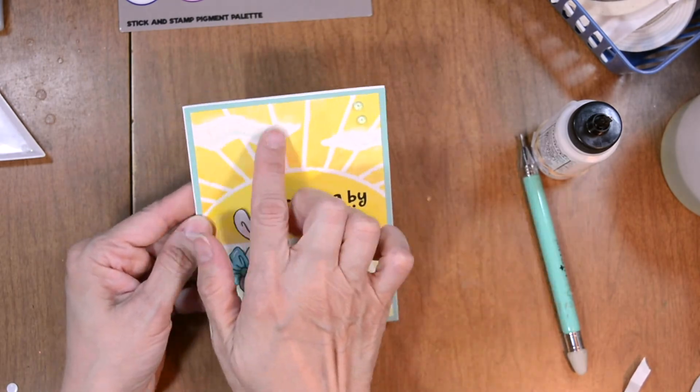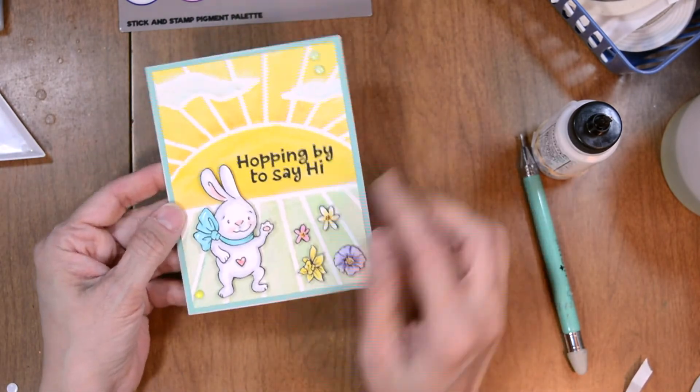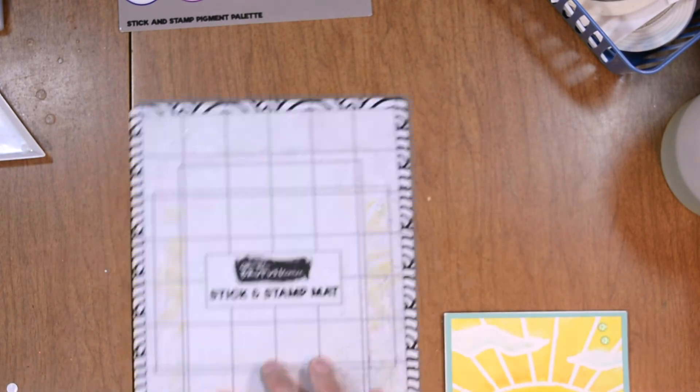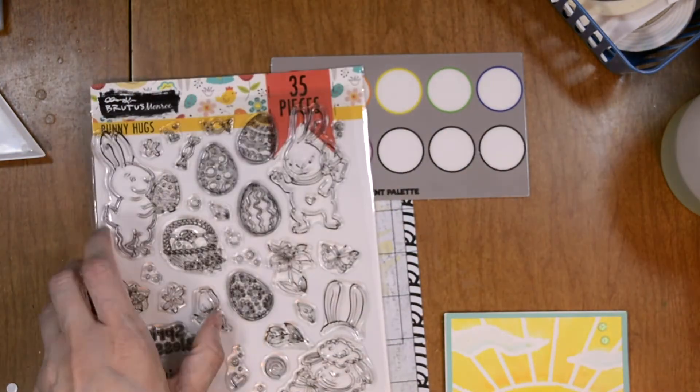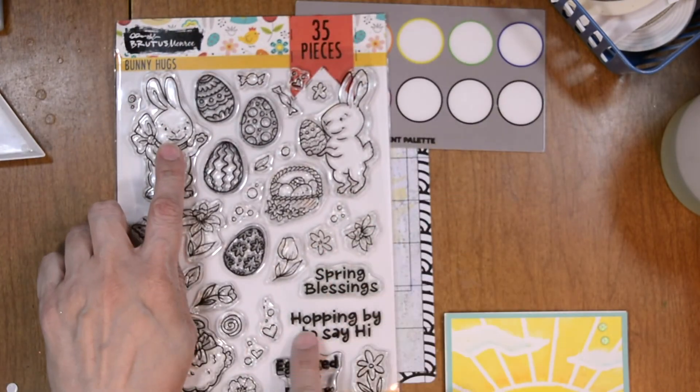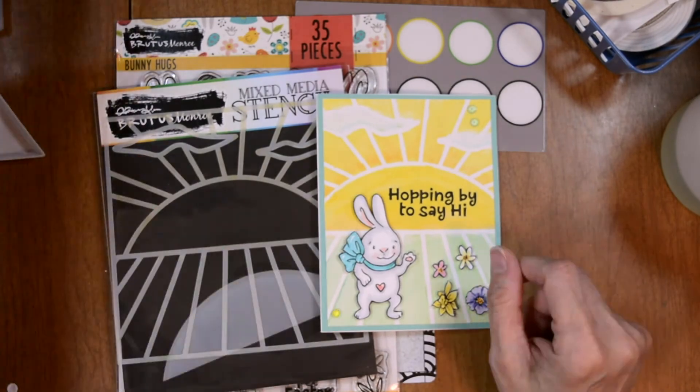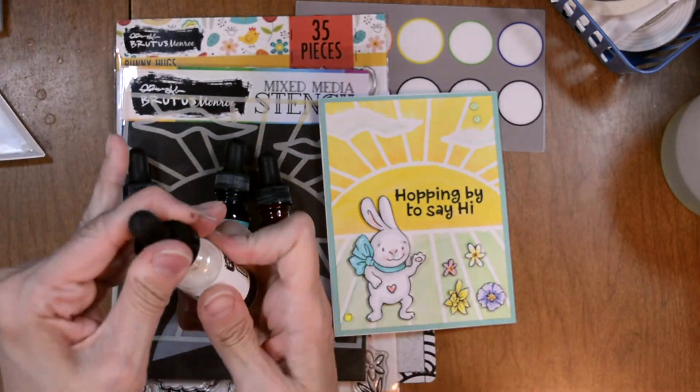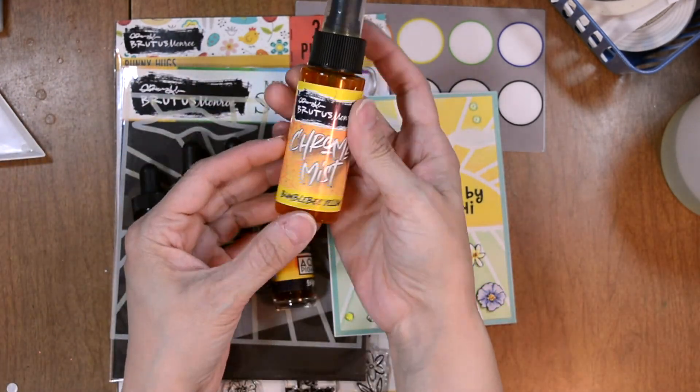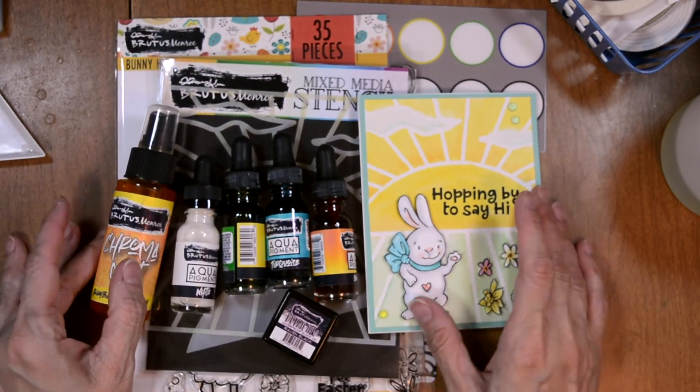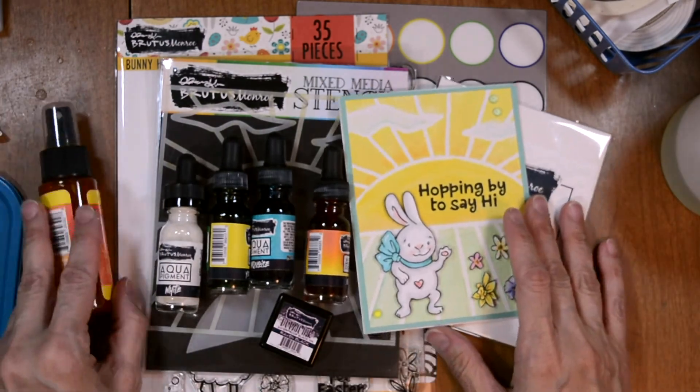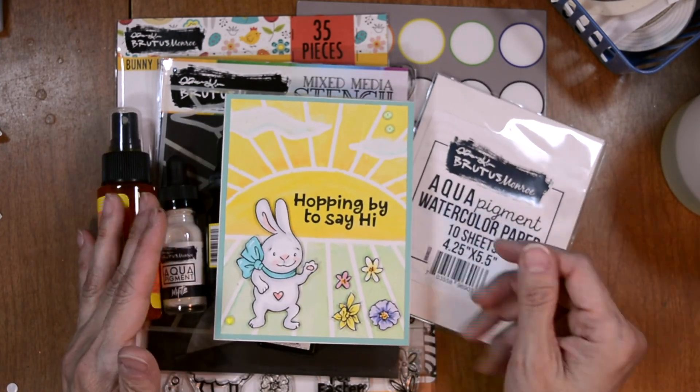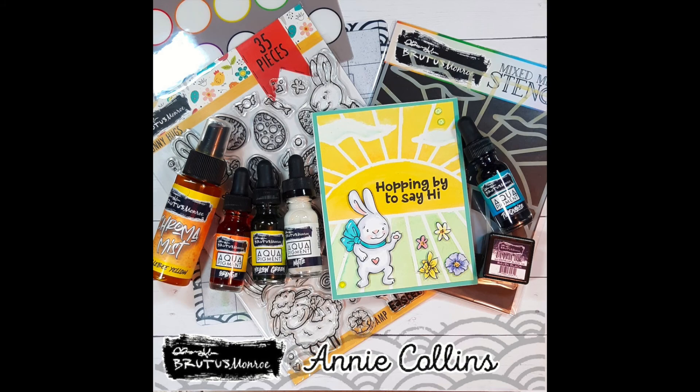There our project is complete. So we have our clouds, a fun field, a nice crisp sentiment, and our cute little bunny waving hi to you. I colored my images using Copic markers, and I'll have those listed as well. So here we used our stick and stamp mat, our pigment palette, our bunny hugs stamp set, the stained glass garden stencil, some aqua pigments, and our chroma mist in bumblebee yellow, our raven detail ink, and of course our acrylic bubbles. I can't forget our aqua pigment watercolor. But like always, I'll have everything listed in the description box below, which links to the Bruce Monroe shop. Thank you for being here, and I hope you found some inspiration.